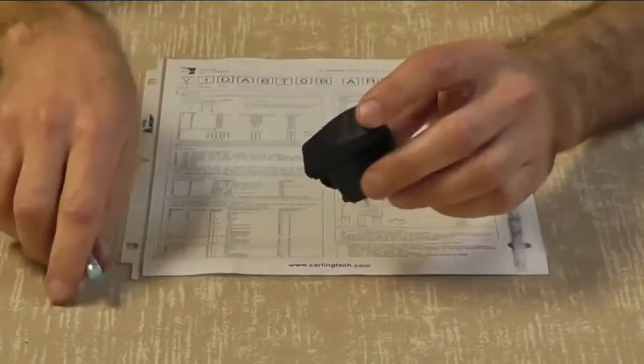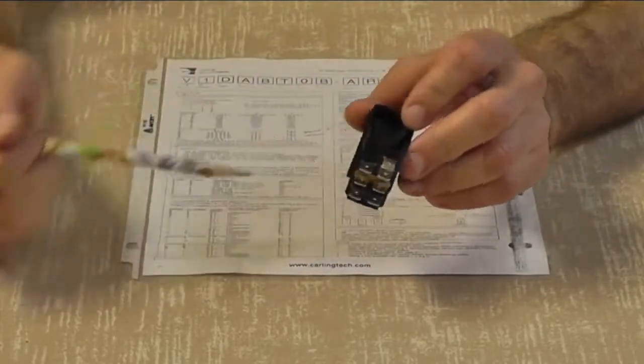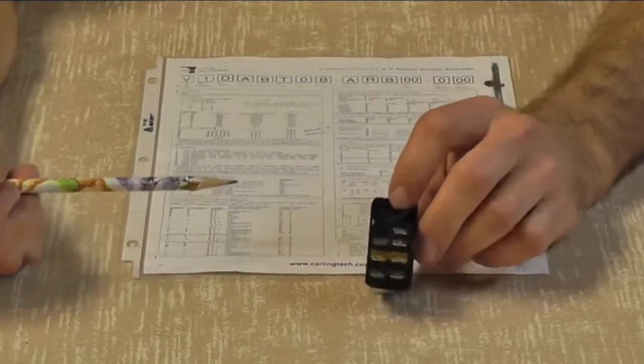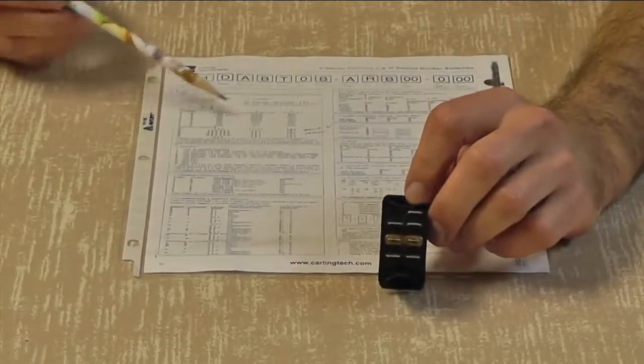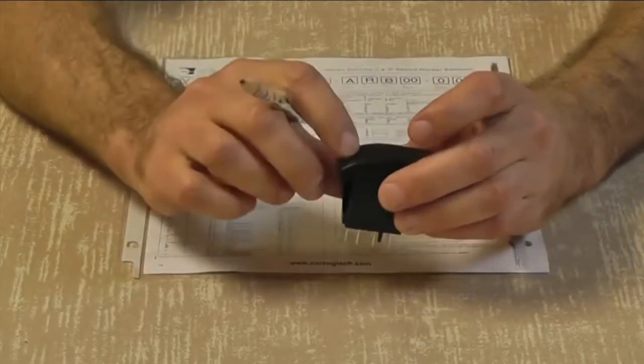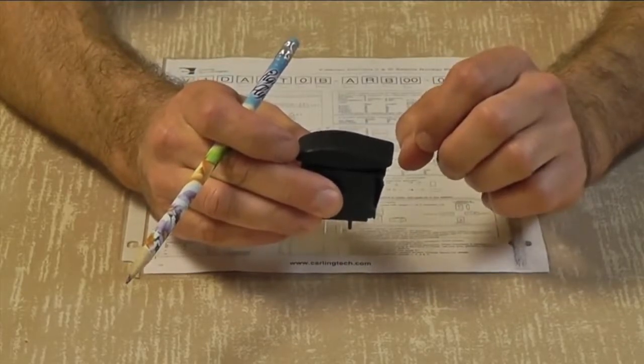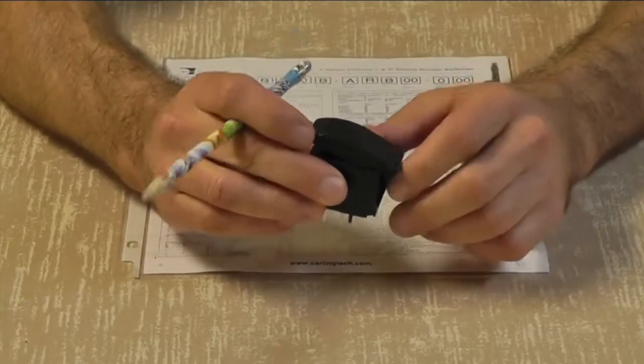So when the actuator is in position number one, this is a VJDJ switch. The J indicates that it is an on, off, on. So in position one, it is on, in the middle position, which is position two, it is off, in position three, it is on again.